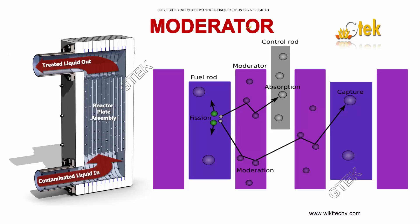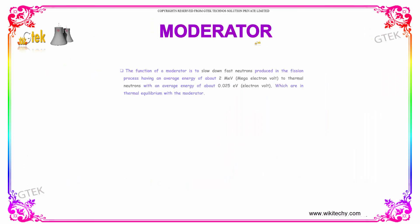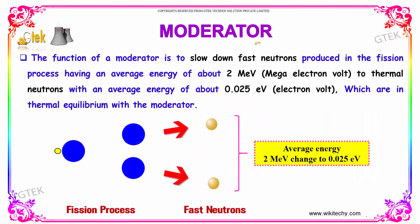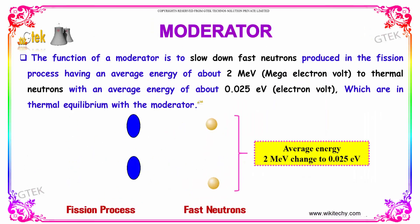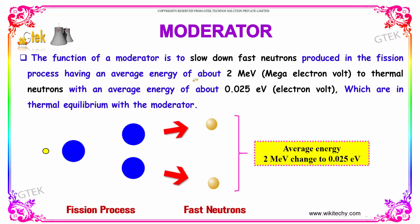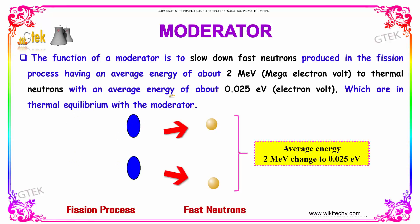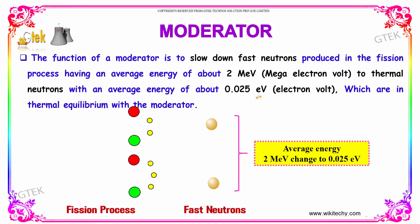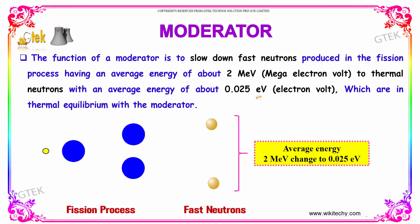Now, let's talk about the moderator. The function of the moderator is to slow down the fast neutrons produced in the fission process, having an average energy of 2 mega electron volts, to thermal neutrons with an average energy of 0.025 electron volts.